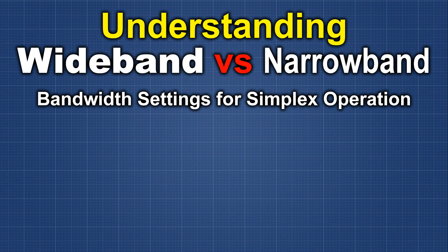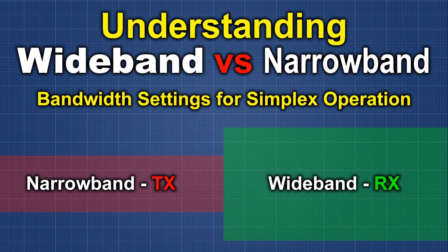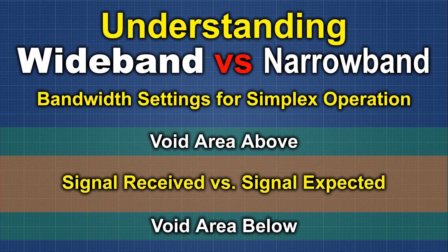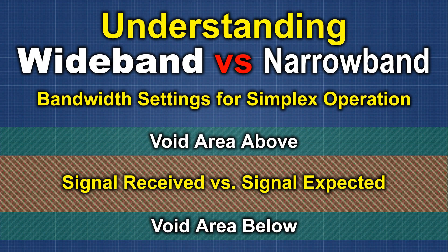So now we know the difference between wideband and narrowband — practically, what does that mean? In simplex — that's radio to radio, no repeater involved — if you are on narrowband and the person you are talking to is on wideband, your audio is going to be diminished; it's going to sound quiet and much softer. Because when they are set to wideband, the filtering on the radio is expecting a certain portion of that bandwidth to be filled. In narrowband, you're only filling half of it, so you sound quiet.